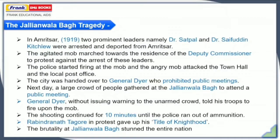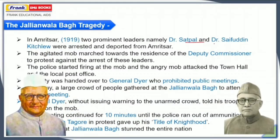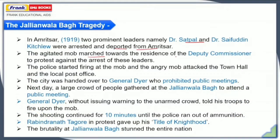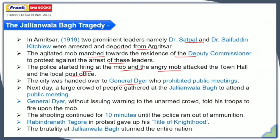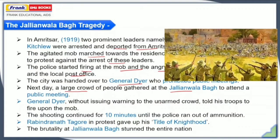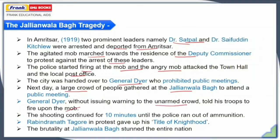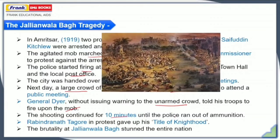The second reason was the Jallianwala Bagh tragedy. In Amritsar, two prominent leaders, Dr. Satpal and Dr. Saifuddin Kitchlew, were arrested in 1919 and deported. The irritated mob marched towards the residence of the deputy commissioner to protest. The police started firing at the mob, and the angry crowd attacked the town hall and local post office. The city was then handed over to General Dyer, who prohibited public meetings and applied martial law. A large crowd gathered at Jallianwala Bagh for a public meeting over the release of these two leaders. General Dyer, without issuing any warning to the unarmed crowd, told his troops to fire upon the mob, and the shooting continued for 10 minutes until the police ran out of ammunition. Hundreds of people died on the spot.